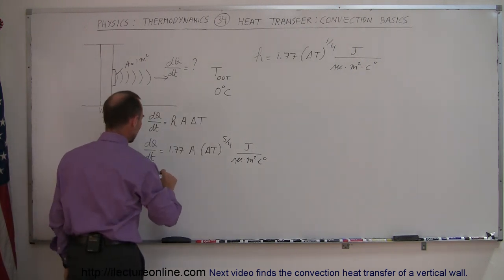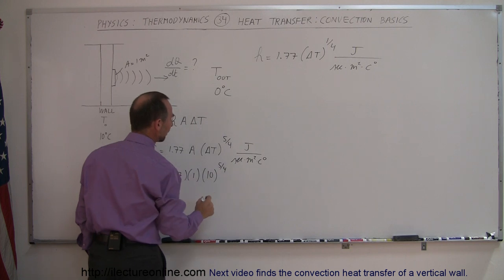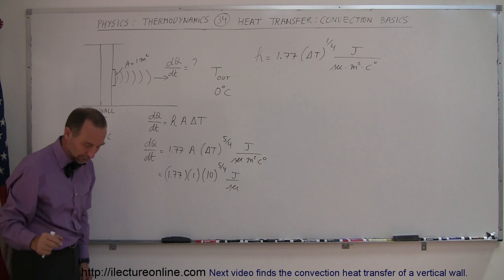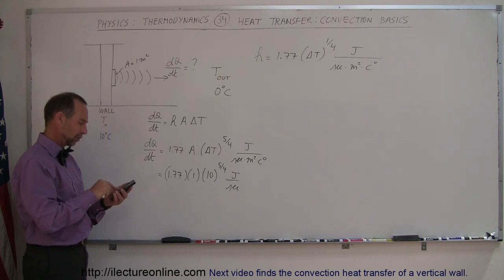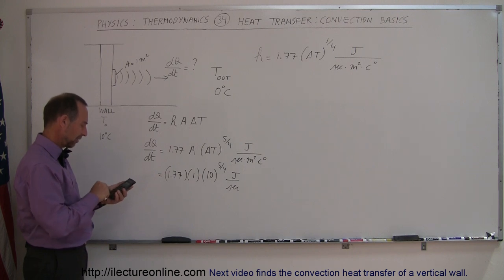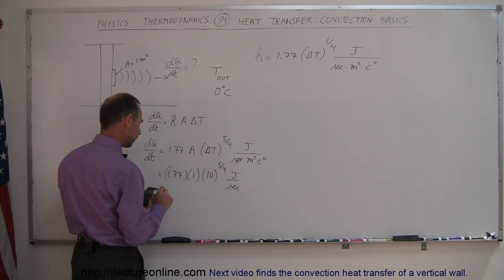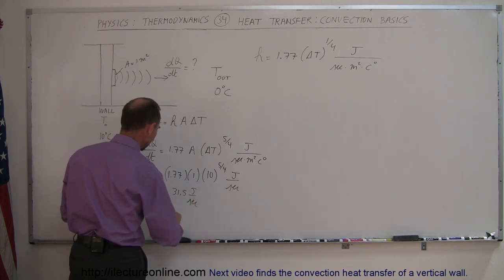This would be equal to 1.77 times one times the temperature difference, in this case ten centigrade degrees, to the five-fourths power. The unit would be joules per second. The meter squared and centigrade degrees cancel out. Let's take ten to the five-fourths power - raise that to five divided by four, then multiply it times 1.77. This equals 31.5 joules per second, or 31.5 watts.